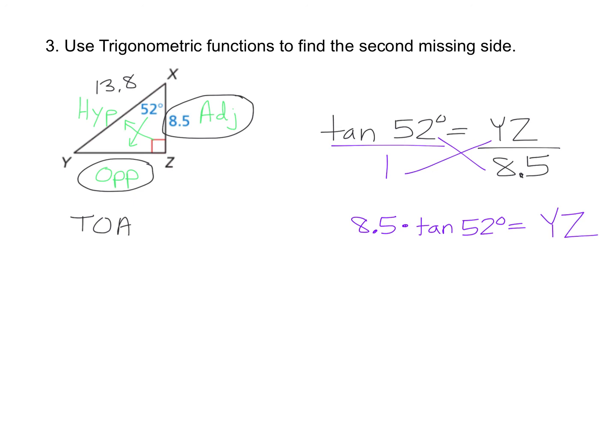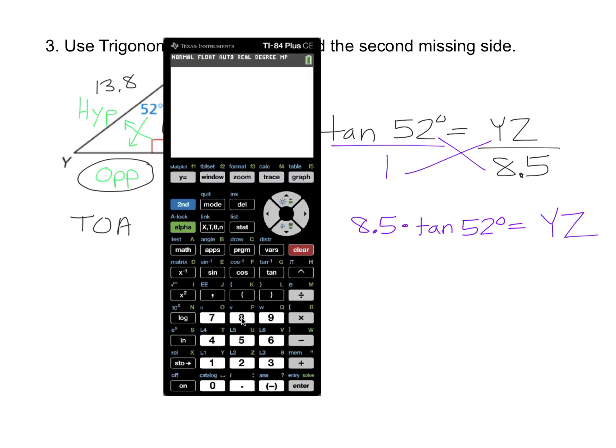Now you just type that into your calculator. 8.5 times the tangent of 52 degrees, close the parenthesis, hit enter, and there's our answer.